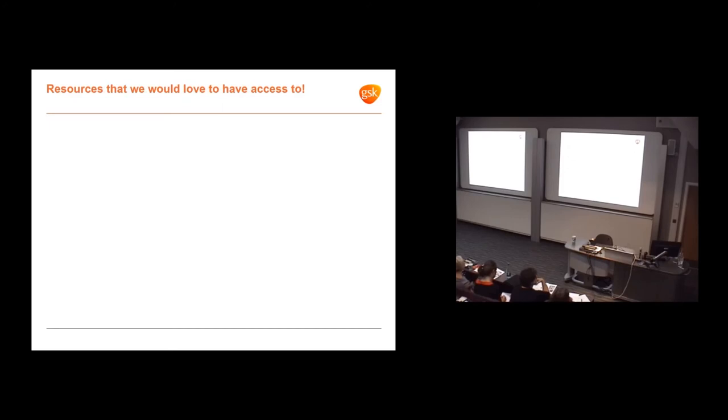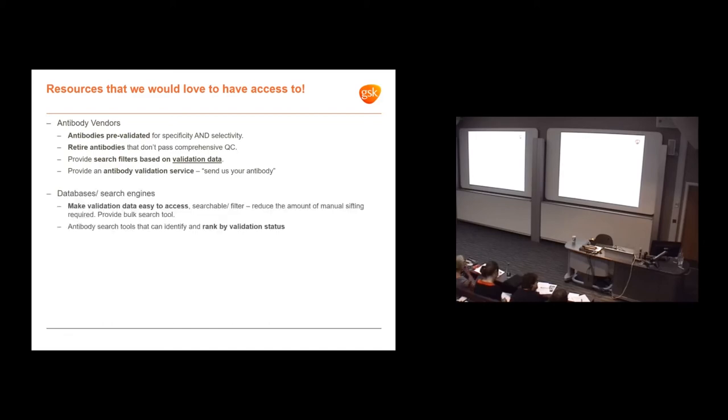I've listed resources we'd love to have access to. From antibody vendors: pre-validated specificity and selectivity, cross-reactivity. We'd love if antibodies could be retired if they don't pass comprehensive QC. We want search filters based on validation data, not just species or assay format. Vendors are building antibody validation platforms - it would be great if we could send in antibodies to be validated on those platforms for a fee. Ideally we don't want to be validating antibodies. That's not our role. We want to be developing drugs.